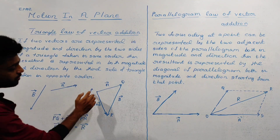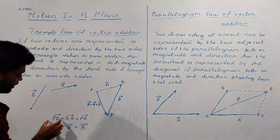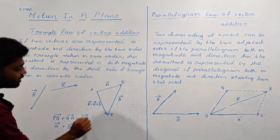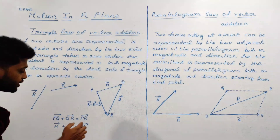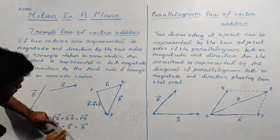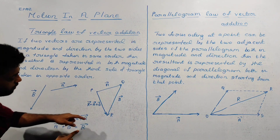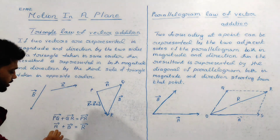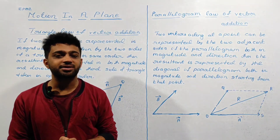Vector PQ, that is vector A, plus vector QR, that is vector B, which is equal to PR — which is the resultant. That is, vector A plus vector B equals the resultant. This is the Triangle Law of Vector Addition.